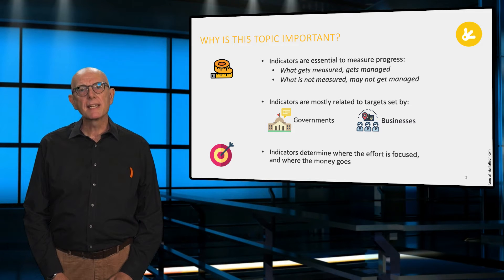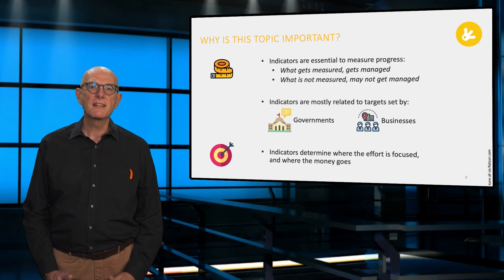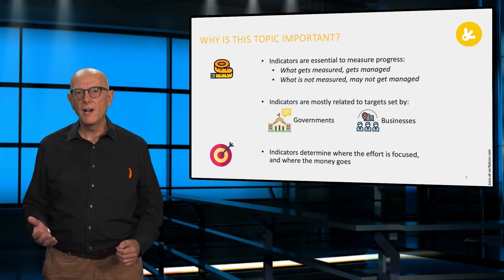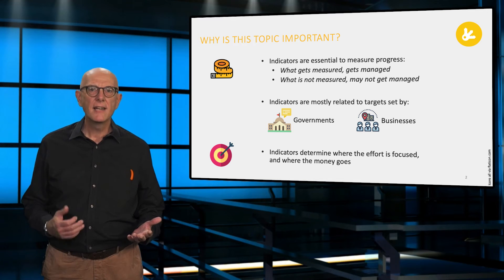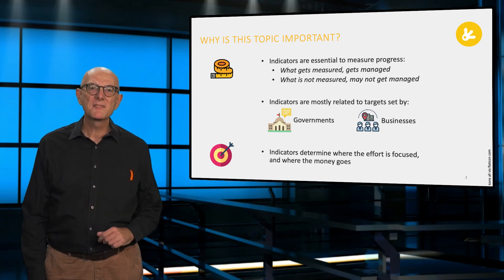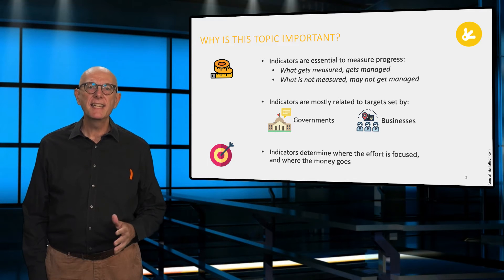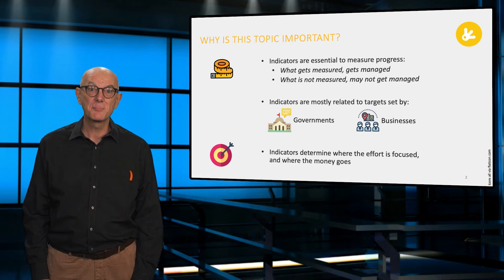Let us begin by clarifying why circular indicators are important in the context of critical materials. In any context, indicators are essential to measure progress. What, why, when, how, where and who are examples of questions which indicators can address. The important thing is that indicators determine where effort is focused and where money gets spent.